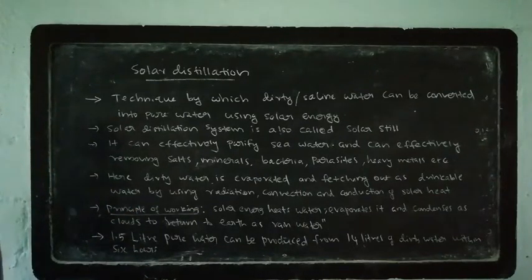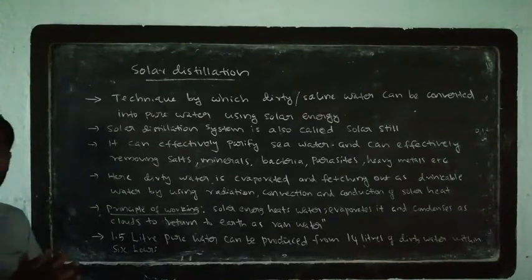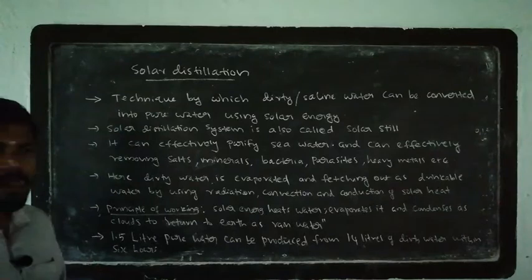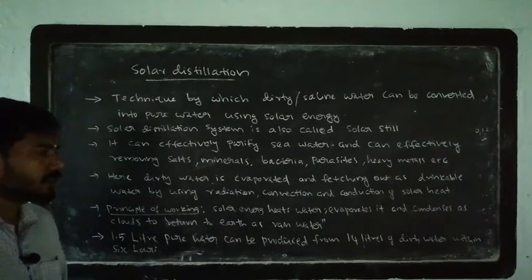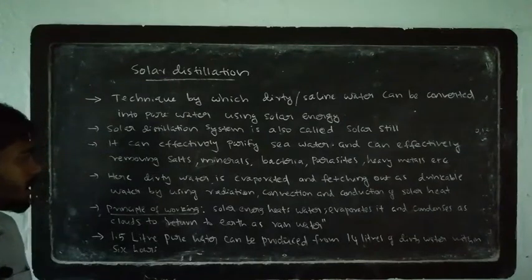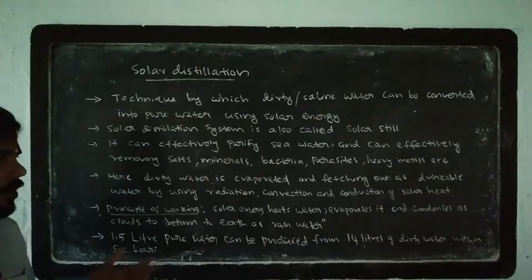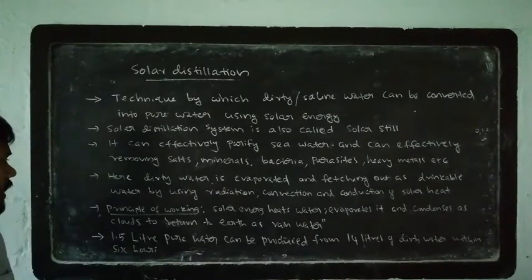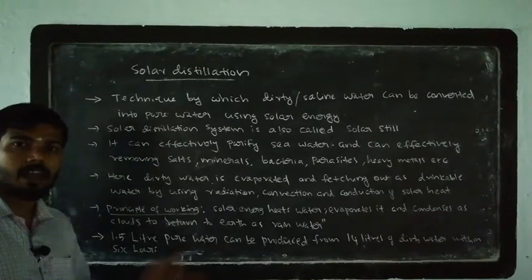What is the principle of working of solar distillation? When we use solar energy, solar energy heats water. In the water, we use solar energy heat to evaporate. Then it condenses as clouds and returns to earth as rainwater. This is the principle of solar distillation.